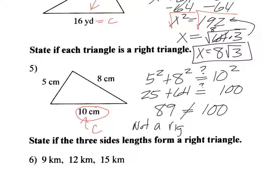So that means this is not a right triangle. Because if it were a right triangle, then they would have been equal to each other.